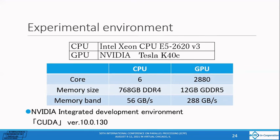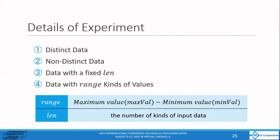The experiments used Intel Xeon CPU E5-2620 and NVIDIA Tesla K40C respectively. The raw performance of each is like this. We compared the computation time of each algorithm using four input data sets.